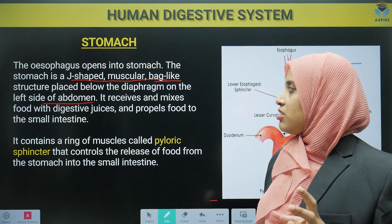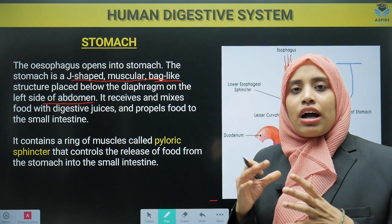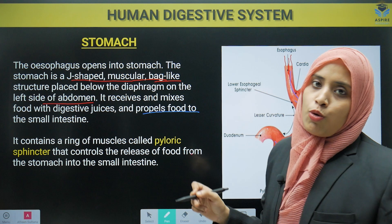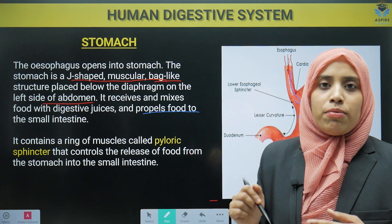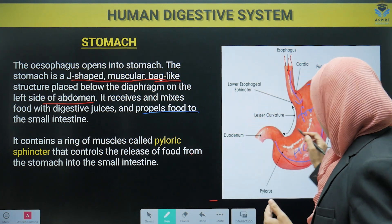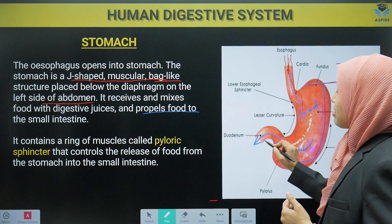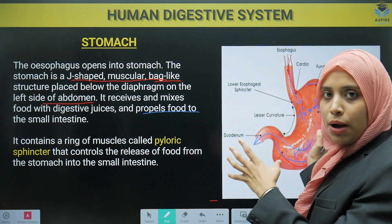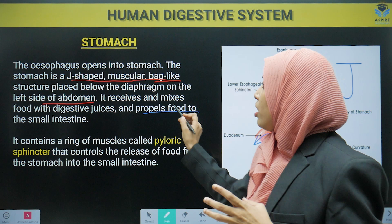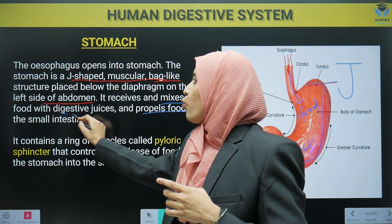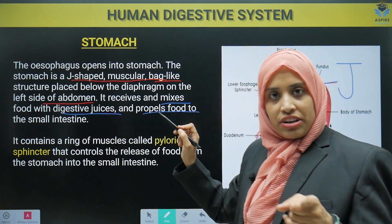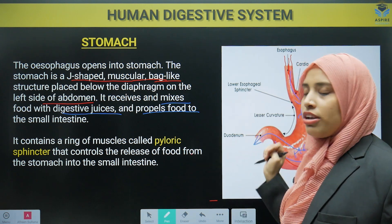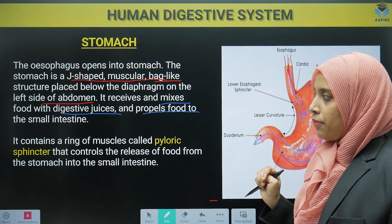The stomach mixes food with the digestive juice, and propels the food into the small intestine. After mixing, the food will be sent forward to the small intestine. So in the stomach, mixing of food with digestive enzymes takes place, and then finally the food is pushed down to the small intestine.